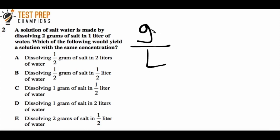The ratio of grams to liters is two to one. We need to find an answer choice where there are twice as many grams as liters. Answer choice B is false because it's a one-to-one ratio. Any answer with fewer grams than liters is also out. Answer C says dissolving one gram of salt in half a liter of water. That's correct because there are twice as many grams of salt as liters of water.